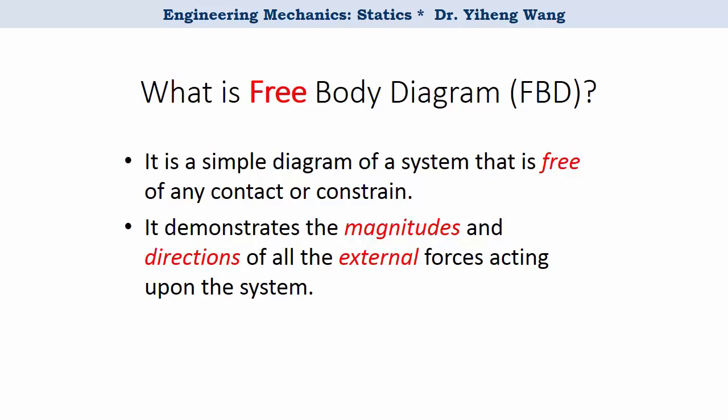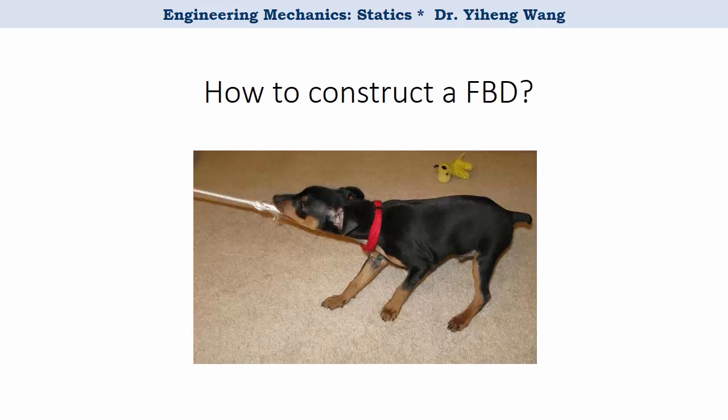After you isolate your study object from its surroundings and sketch it, you need to demonstrate the magnitudes and directions of all the external forces acting on it to the best of your knowledge. Let's use this example to demonstrate how to properly construct a free body diagram. In this picture, a puppy is being pulled through a string, however the puppy stays still.